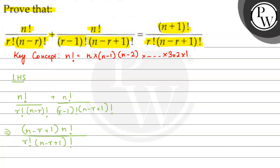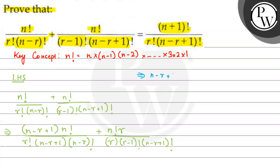We have n factorial, and n minus r plus 1, then n minus r factorial. Now here, n factorial multiplied by r, divided by r, so r multiplied by r minus 1 factorial, multiplied by n minus r plus 1 factorial. The numerator term gives us: n minus r plus 1 multiplied by n factorial upon r factorial multiplied by n minus r, plus n minus r plus 1 factorial.